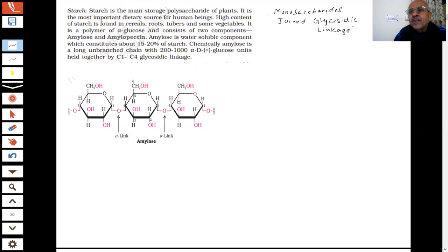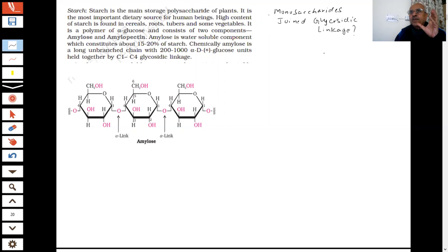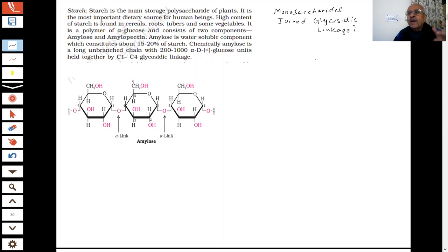What is a glycosidic linkage? This is an important question for the exam — it has been asked many times. Monosaccharides, polysaccharides — every time I represent them with an oxide linkage. When two monosaccharide units are joined by an oxide bond with the loss of a water molecule, that linkage is called a glycosidic linkage.